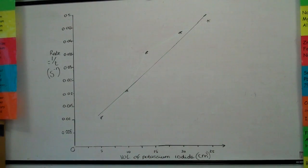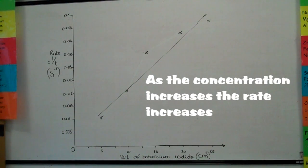We take values straight from our table and plot them in the graph. Along the x-axis is volume of potassium iodide in cm³. Along the y-axis is rate 1 over T. The unit of this is s to the minus 1.